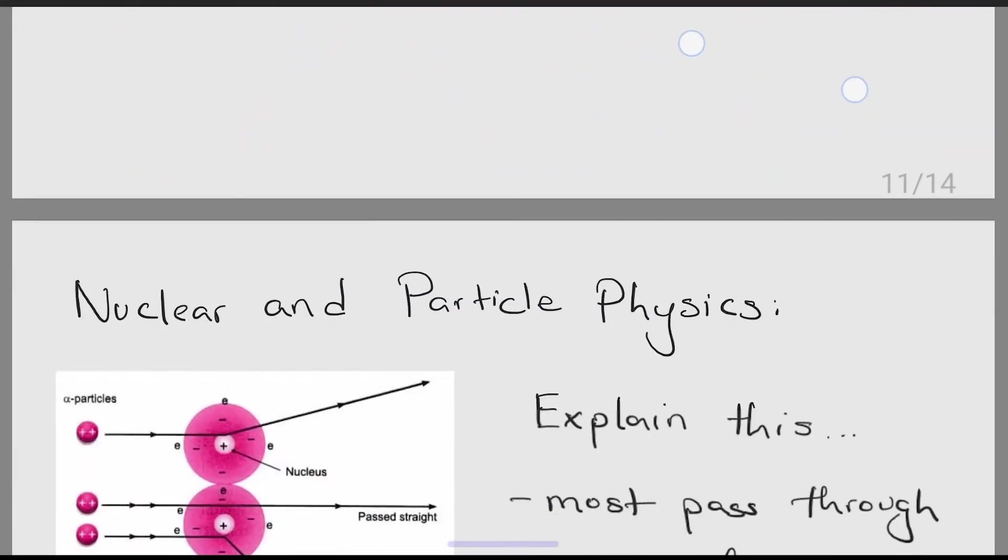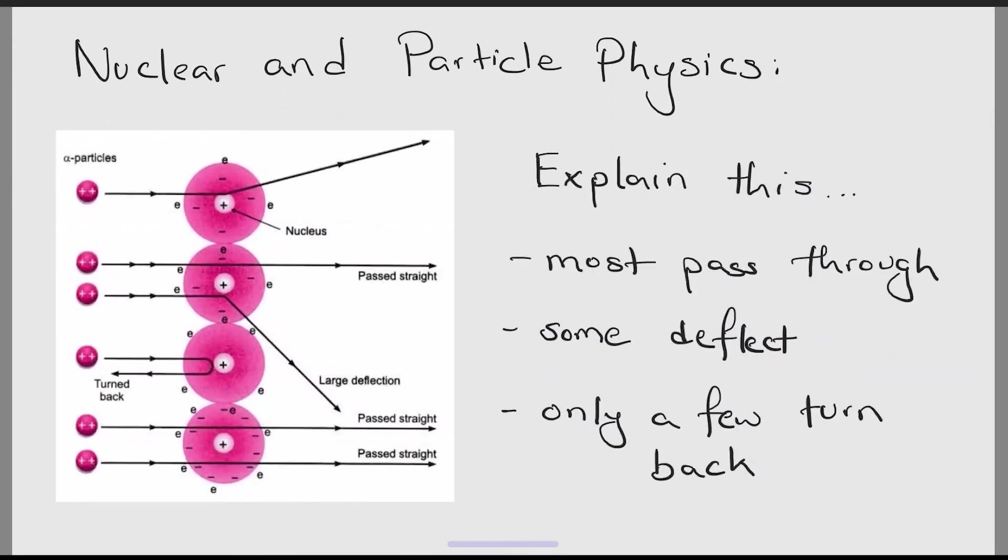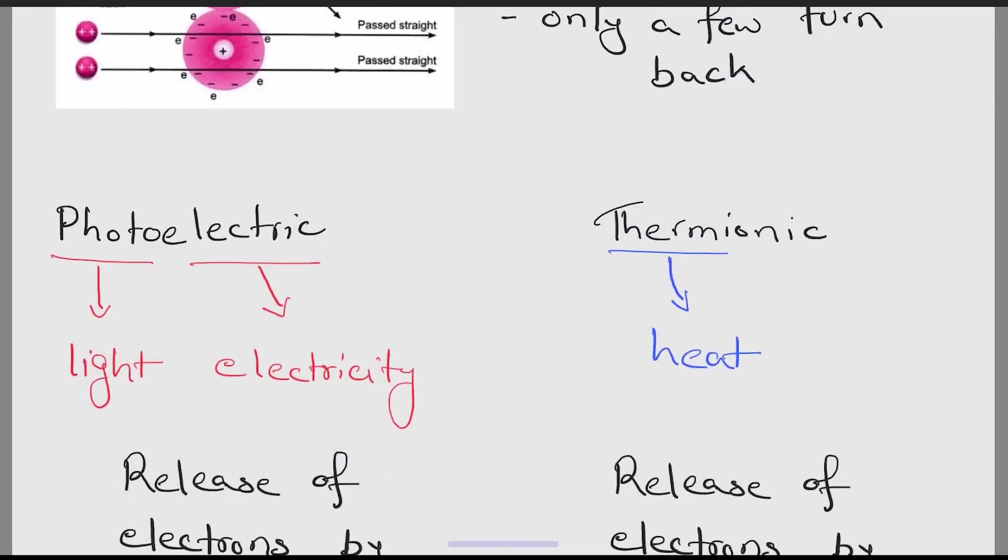Moving on, the next topic is nuclear and particle physics. This is a very common question using alpha particles and gold nucleus. Most alpha particles pass through because the atom is mostly empty space. Some alpha particles deflect because the positive nucleus repels the positive alpha particles. Only a few turn back. This is because they move straight into the nucleus.